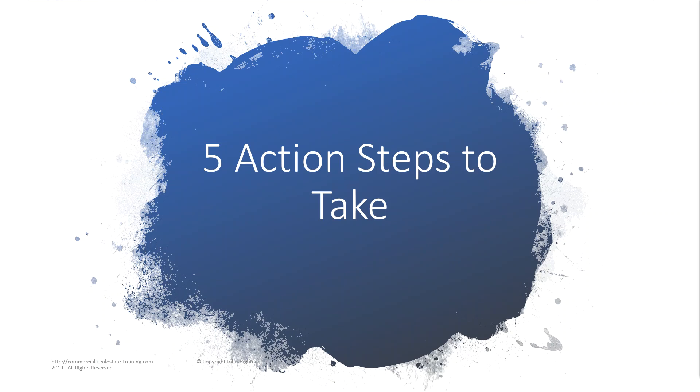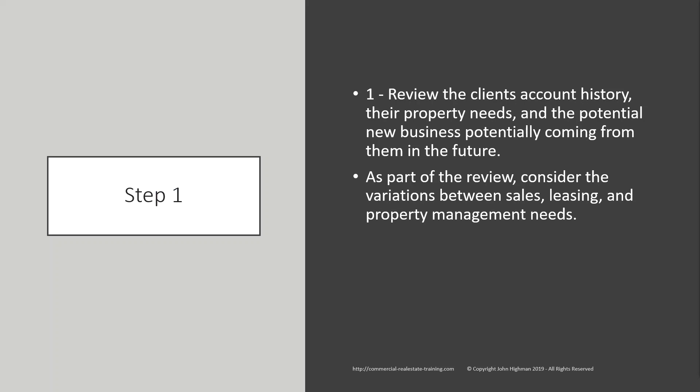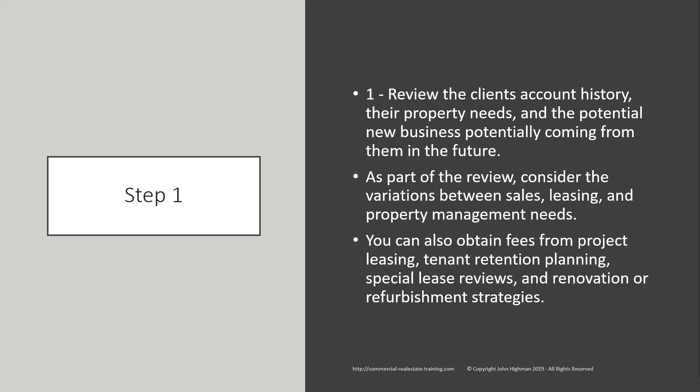Here are five action steps to take. Number one: review the client's account history, their property needs, and the potential new business they may have in the future. Consider the variations between sales, leasing, and property management — you want them to come to you with all of their challenges. Make sure your services are comprehensive. Introduce them across the team so they understand the people and skills available. You can also obtain fees from project leasing, tenant retention plans, special lease reviews, renovation or refurbishment strategies. Look at all the variations.